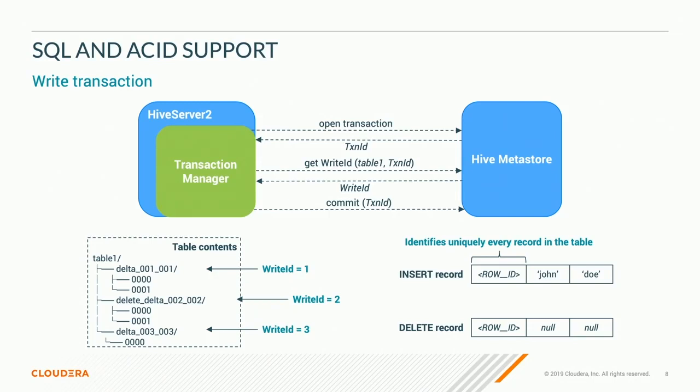The reason for separate insert and delete folders will become clear when I explain reads. Looking at the record structure: assume the table has two columns, first and last name. Each record contains an additional nested column — a row ID containing write ID, file ID, and a unique identifier of the record within the file. This row ID lets you uniquely identify every record in the table, and by doing this we can model deletes as a record pointing to the record being deleted.